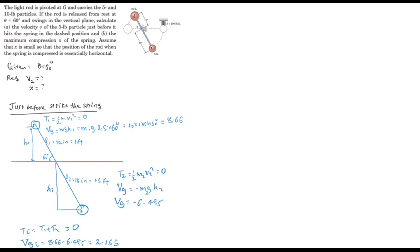For the final condition, once the system reaches the horizontal position just before striking the spring, the potential energy Vg_final = 0, because there is no elevation change at that point.